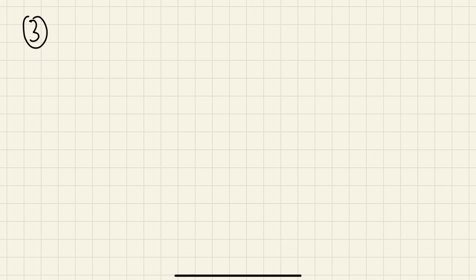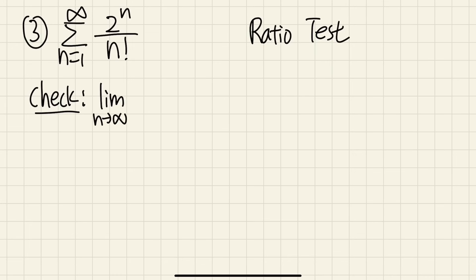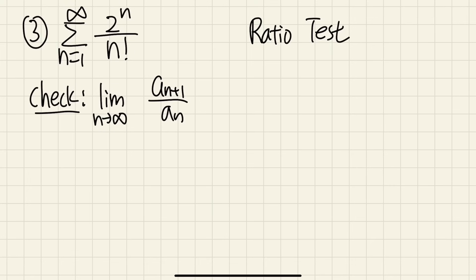Number 3: we are looking at the series as n goes from 1 to infinity of 2ⁿ over n factorial. We have a factorial, so we should use the ratio test. What we have to check is the limit as n goes to infinity of |aₙ₊₁ / aₙ|. Rather than a complex fraction, write it as aₙ₊₁ times 1/aₙ — that's slightly easier.